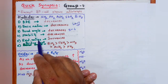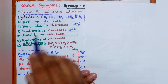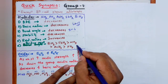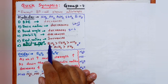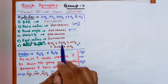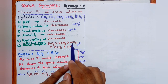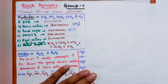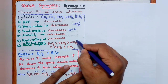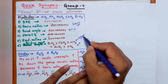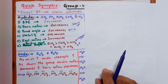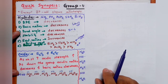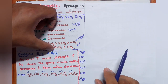Reducing nature increases down the group because bond dissociation energy decreases — reducing nature is the ability to give hydrogen. For boiling point, the order is not common: BiH3 is more due to higher molecular mass, then SbH3, but NH3 is higher than AsH3 and PH3 because NH3 has hydrogen bonding. This order is very important.